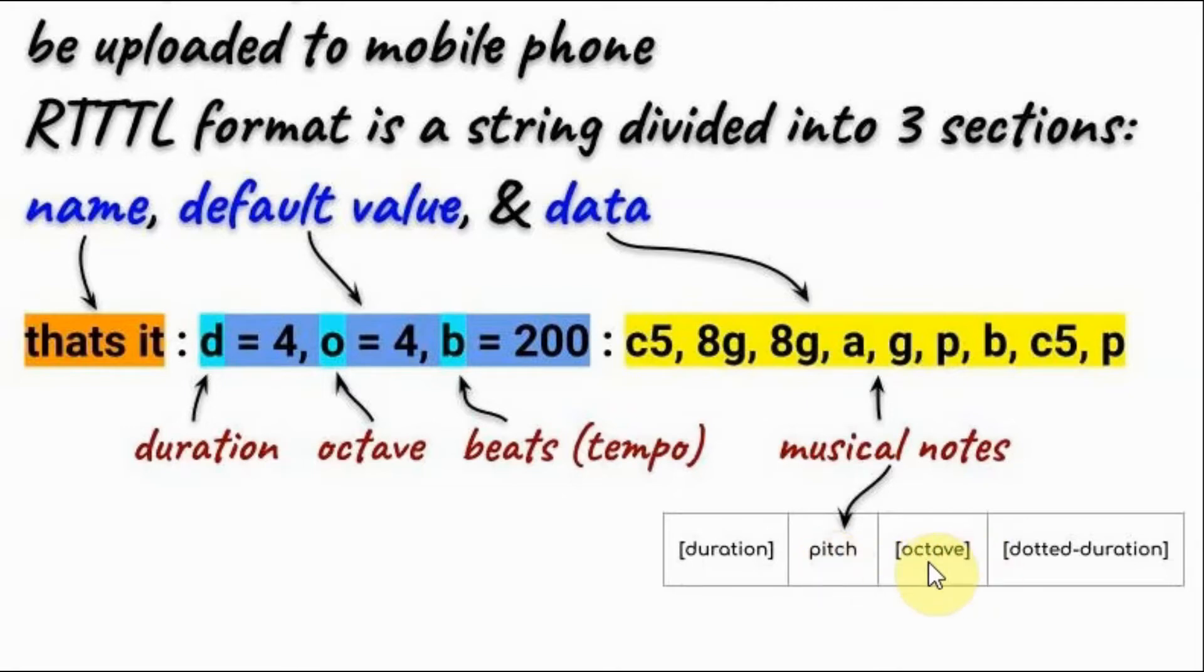Octave is the distance from one note to the other of the same letter. Dotted duration, if available, means that the duration is duration plus half duration.